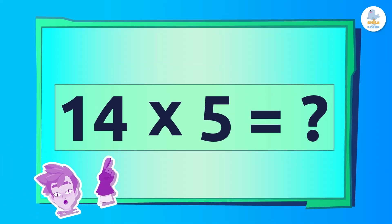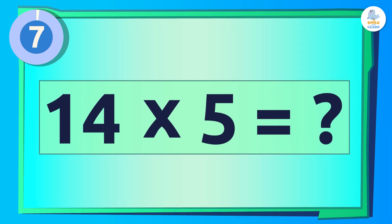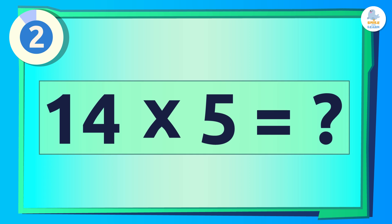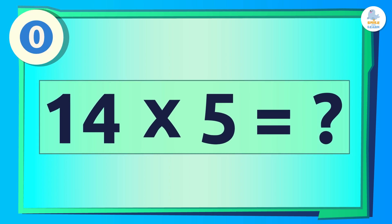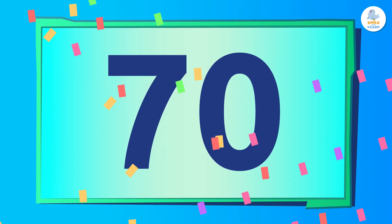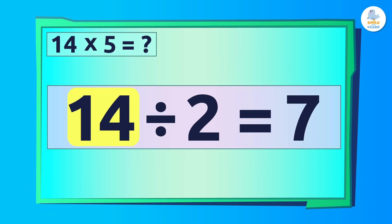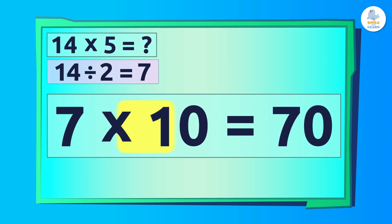What is 14 times 5? Great! It's 70! First, we divide 14 by 2, which gives us 7. Then we multiply 7 times 10, which gives us 70.